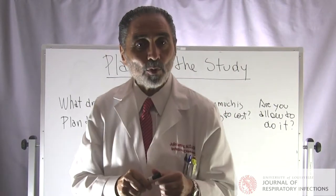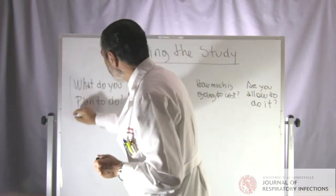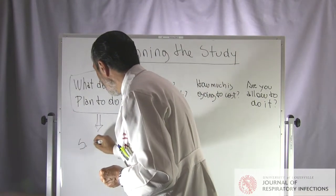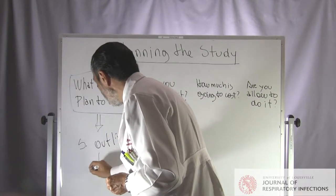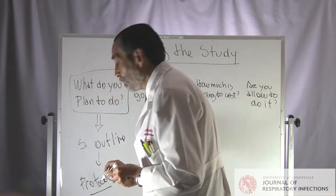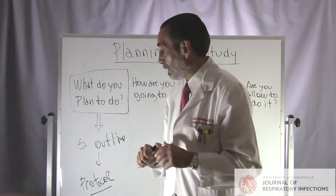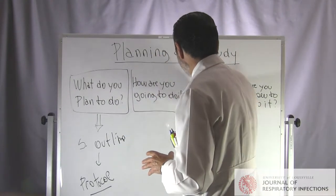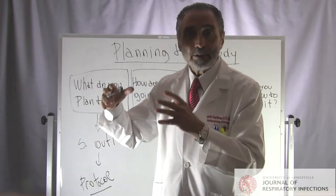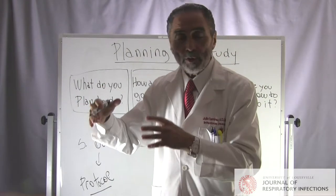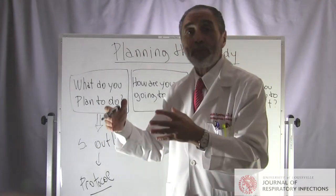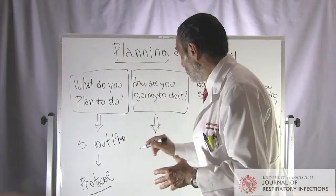There are four questions in planning the study. The first is what do you plan to do — answered by the study protocol, starting from the study outline. The second question is how are you going to do it? For example, the protocol may say you plan to collect an oropharyngeal swab for PCR for atypical pathogens. How exactly you do it is described in what is called the standard operating procedures, or the study manual and manual of operations — specifying, for instance, what type of swab, how the patient opens their mouth, how far back you go, and what constitutes fever.